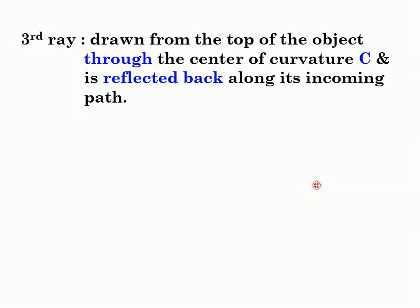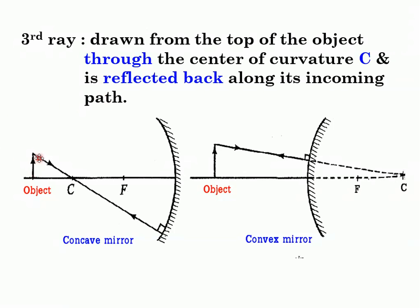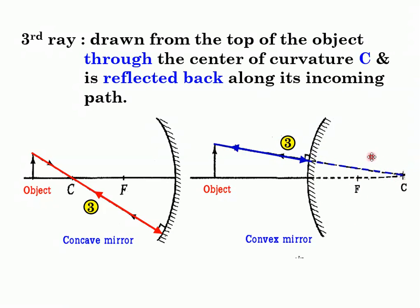The third ray is the easiest. Draw from the top of the object through the centre of curvature, and it reflects back along its incoming path — just one straight line with arrows going down then back up. For a convex mirror, the centre of curvature is behind, so use dotted lines for the portion behind the mirror; the ray then bounces back in front.